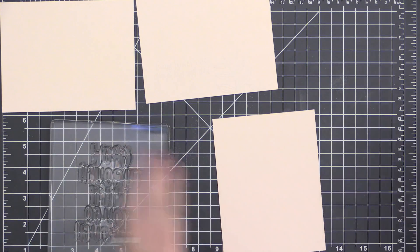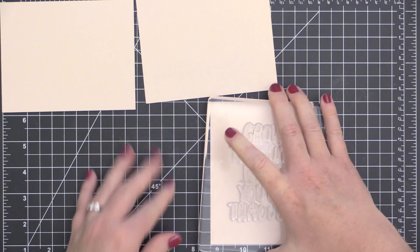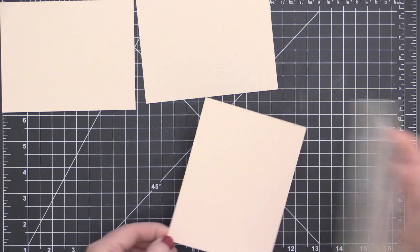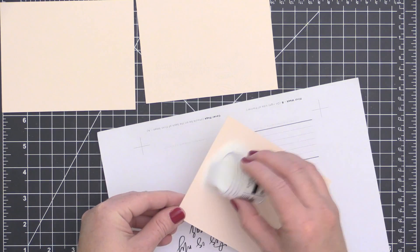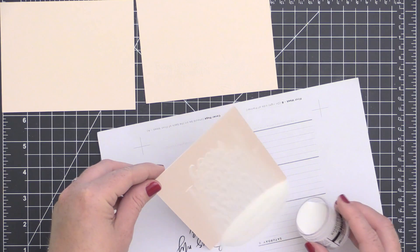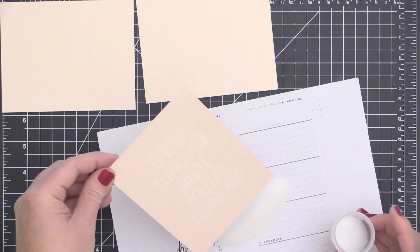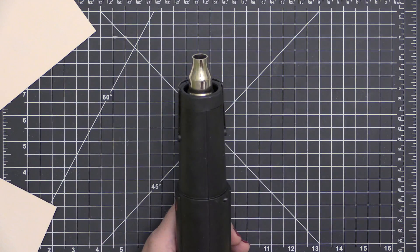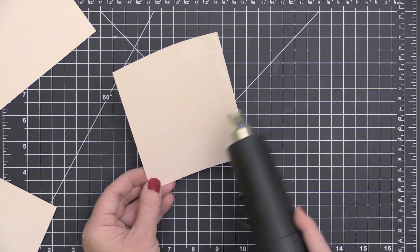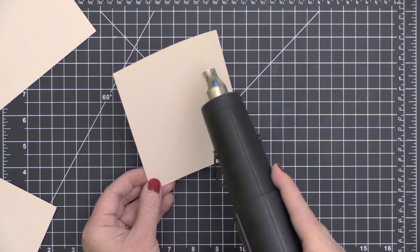Finally, I'm going to take this really big bold sentiment and stamp it onto this A2 sized card front panel, so it measures four and a quarter by five and a half. Once again, I'm sprinkling on that Ranger sticky embossing powder. Now I'm going to let my heat tool heat up super hot.